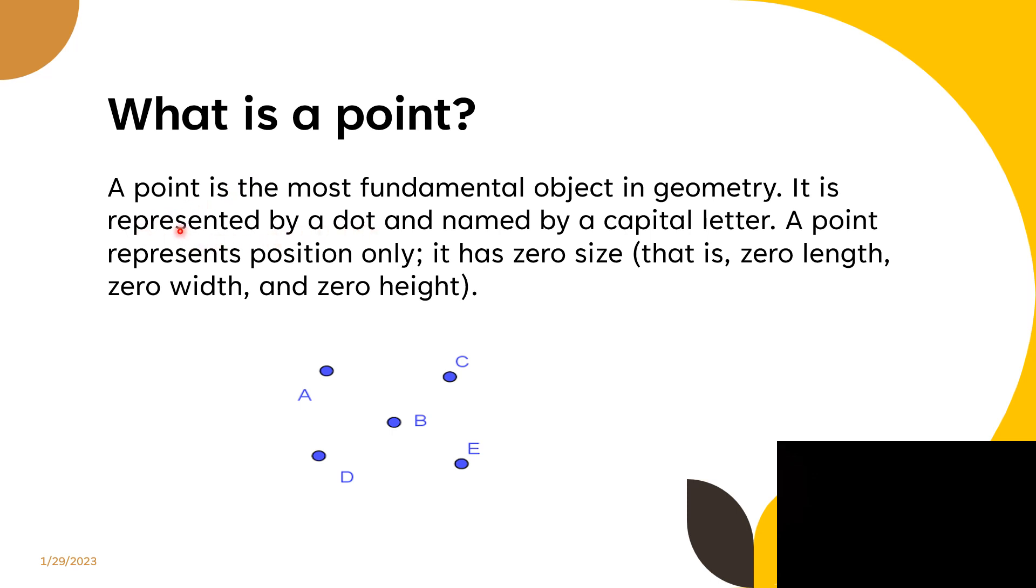What is a point? A point is the most fundamental object in geometry. It is represented by a dot and named by a capital letter. A point represents position only; it has zero size, that is, zero length, zero width, and zero height. So these are examples of points.